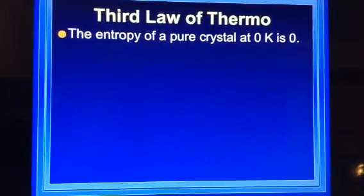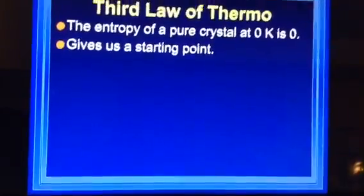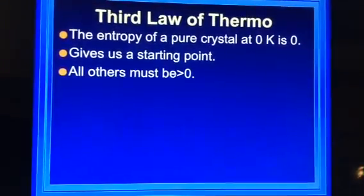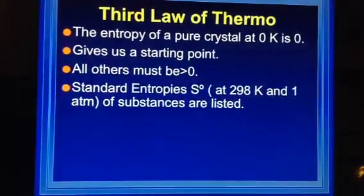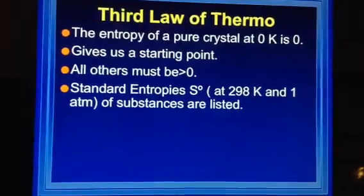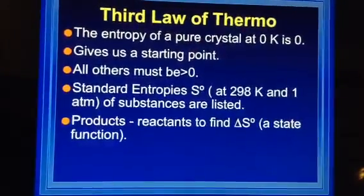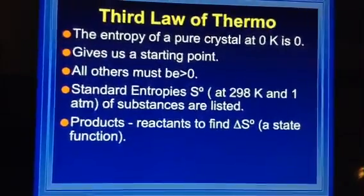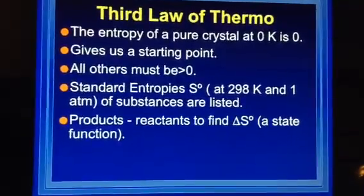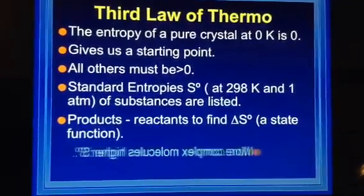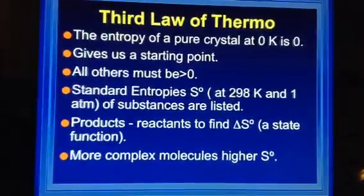Alright, so the entropy of a pure crystal is zero Kelvin at zero. We talked about this the other day. So it gives us a starting point. Everything else must be greater than zero. So our standard enthalpies, S-naught, these are the ones that we looked at in the back of the book. The substances are listed. So we basically look at products minus reactants to find delta S. And it's a state function. Pay close attention to your gases, solids, and liquids. The more complex molecule, the higher the S-naught.